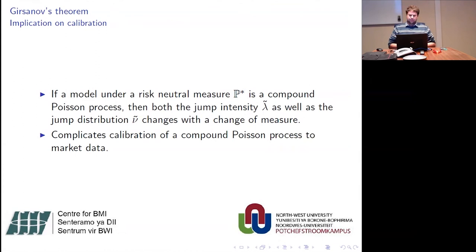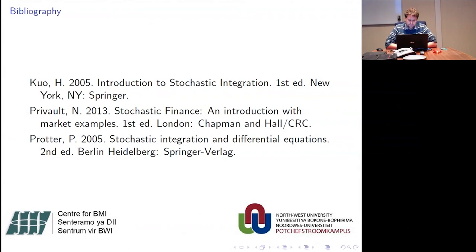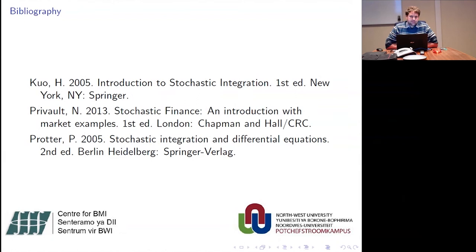The bibliography for today includes three textbooks: the highly theoretical 'Stochastic Integration and Differential Equations' by Protter; Kuo's stochastic integration textbook, from which the lemma used in the proof of Girsanov's theorem was obtained; and Privault's textbook, which provided the last example of the compound Poisson process. For someone with a statistical background, the 'Stochastic Finance' book by Privault is easier to read than some of the more mathematical textbooks.